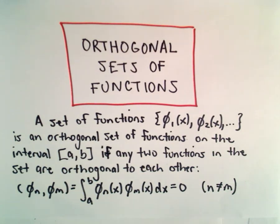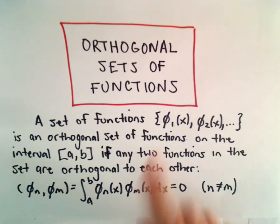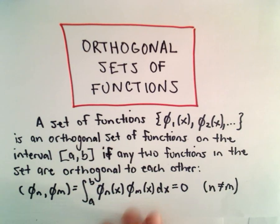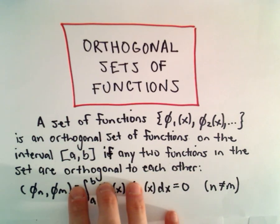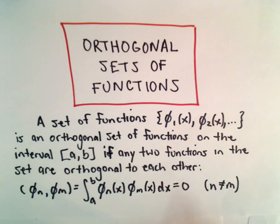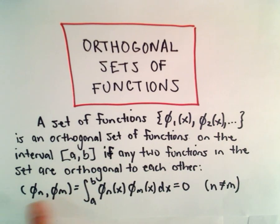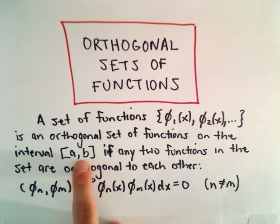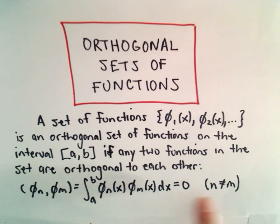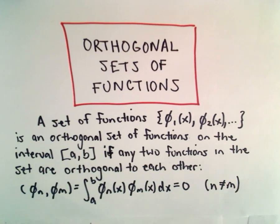In this video I'm going to look at orthogonal sets of functions. I'll give the definition quickly and then we'll do a specific example showing that a set is an orthogonal set. We say a set of functions φ₁(x), φ₂(x), etc. is an orthogonal set of functions on the interval a to b if any two distinct functions in the set are orthogonal to each other. To find the inner product, we multiply them together, integrate over the specified interval, and if that equals zero, those two functions are orthogonal.